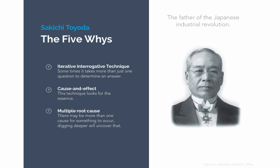Enter the five whys. The five whys is a thinking technique developed by Sakichi Toyota. If that name sounds familiar, it's because Toyota is considered the father of the Japanese Industrial Revolution, which spawned such mega brands as his namesake, Toyota Motor Corporation. The five whys is an iterative interrogative thinking technique that looks for cause and effect based on an escalating repetition of the question: why?